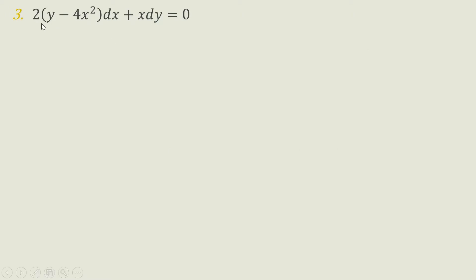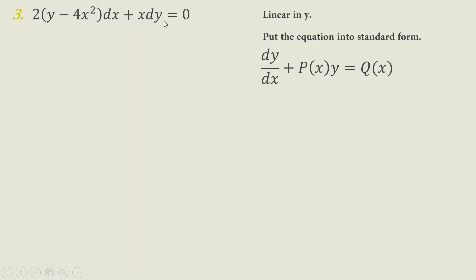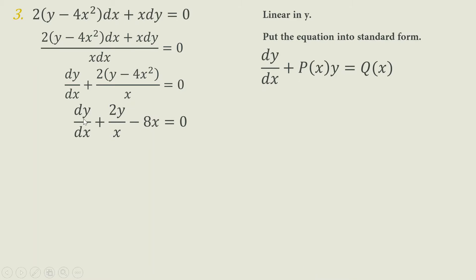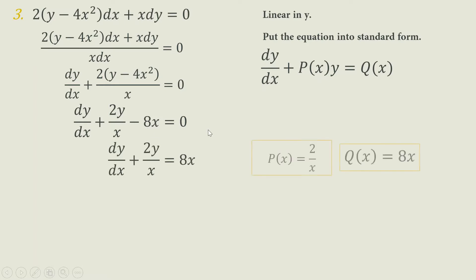For our third example, the equation is 2(Y minus 4X²) DX plus X DY equals zero. We use linearity in Y and put it in standard form. Dividing both sides by X DX results in DY/DX plus 2(Y minus 4X²)/X equals zero. Separating terms: DY/DX plus 2Y/X minus 8X. Transferring 8X, we get P(X) equals 2/X and Q(X) equals 8X.